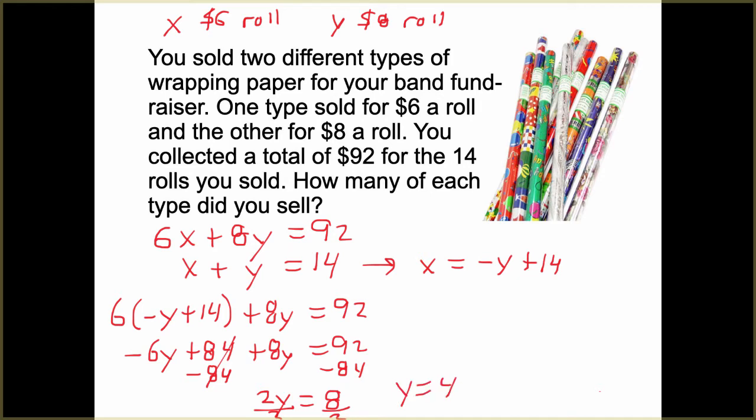So we have 4, $8 rolls. Well, if we have 4, $8 rolls, if we plug 4 back into this, we'd have X is negative 4 plus 14, which is 10. So we'd have to sell 10, $6 rolls. And 10 plus 4 is 14. And if you plug these in, you will find that they work. So we have sold 4, $8 rolls and 10, $6 rolls of wrapping paper.